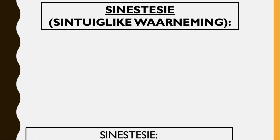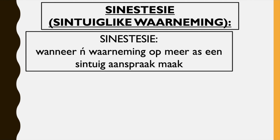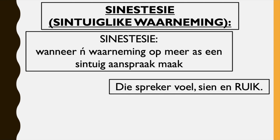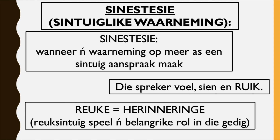So sinestesie — sintuiglike waarneming. Sinestesie is wanneer 'n waarneming op meer as een sintuig aanspraak maak. So what it refers to here is using your senses to observe something, and usually you would use more than one of your senses. In this poem there is more than one sense being used — the speaker feels things, sees things, but specifically reik — he smells things. Rieke equals herinneringe. Rieksintuig speel 'n belangrijke rol in die gedigt. So every sense reminds him or takes him back to a time, reminds him of someone or something that happened. Therefore smell plays a really important role in this poem.